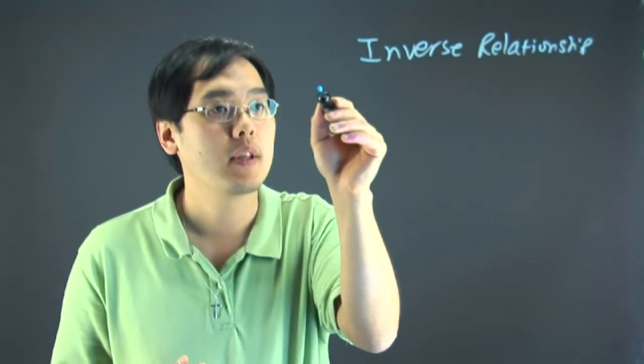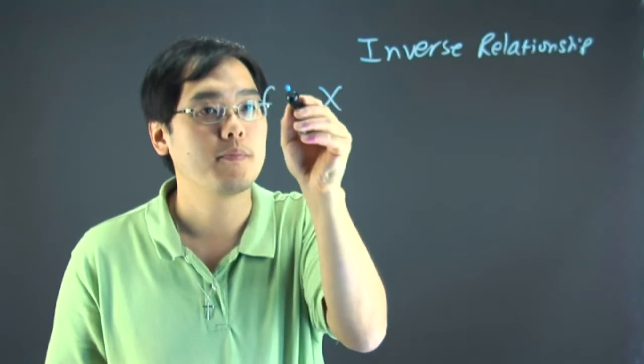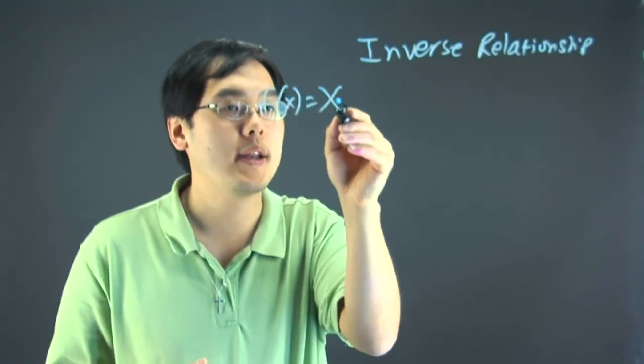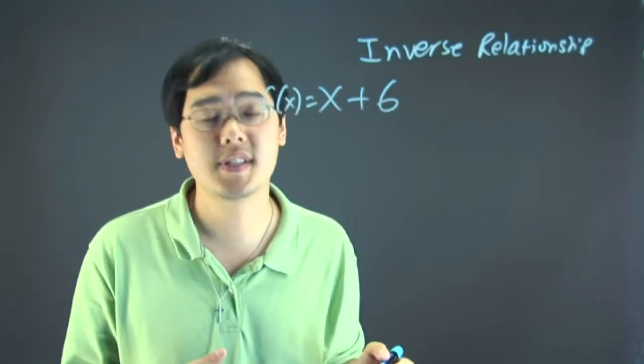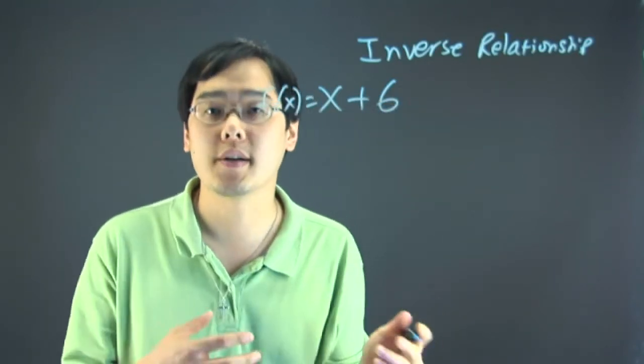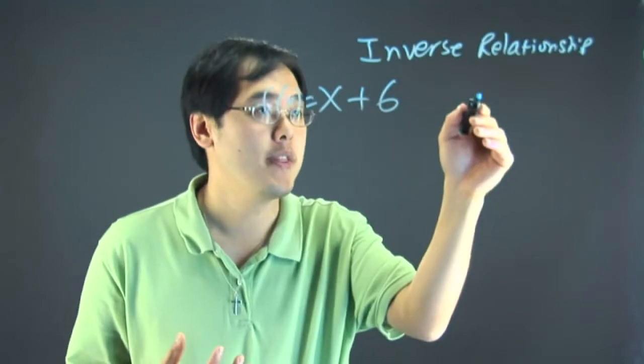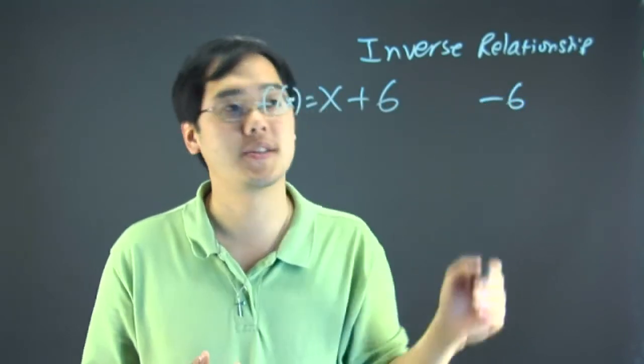For example, if you have a function that involves x plus 6, you're talking about an addition of 6. The inverse relationship is the opposite operation, which means there's going to be subtraction of 6 involved.